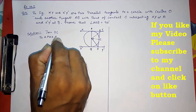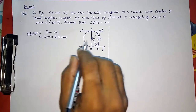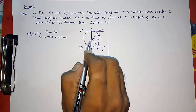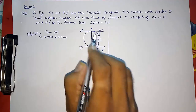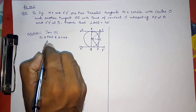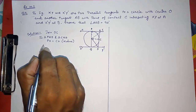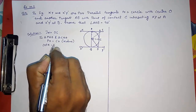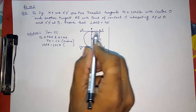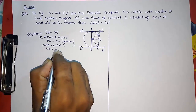In triangles CAO and PAO: CO equals PO because they are radii of the same circle. Angle OPA equals angle OCA, both 90 degrees, because tangents are always perpendicular to the radius at the point of contact (Theorem 10.1). And AO equals AO, as it is common to both triangles.